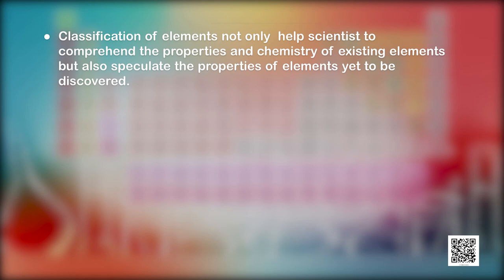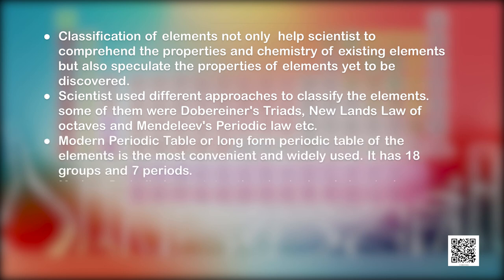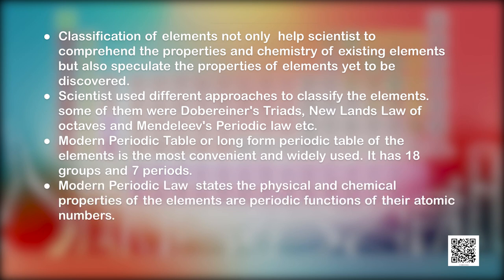Let us recapitulate what we have learned so far. Classification of elements not only helps scientists comprehend the properties and chemistry of existing elements but also helps speculate the properties of elements yet to be discovered. Scientists used different approaches: Dobereiner Triads, Newlands' Law of Octaves, and Mendeleev's Periodic Law. The modern periodic table or long form periodic table is the most convenient and widely used, with 18 groups and 7 periods. Modern periodic law states that the physical and chemical properties of elements are periodic functions of their atomic numbers.